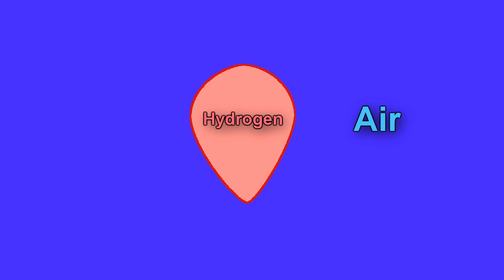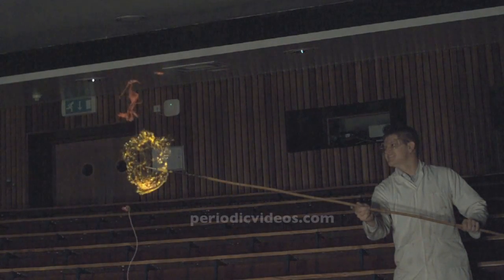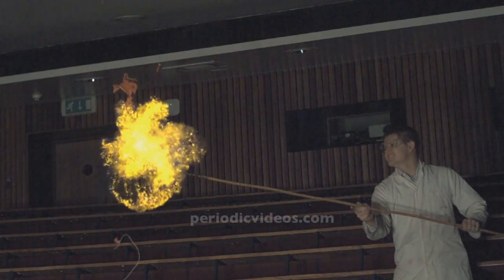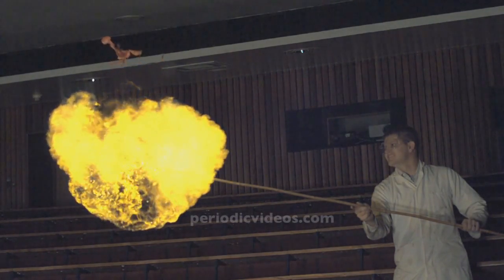So as expected when the balloon bursts the flame initially goes around the outside of the balloon where there is both hydrogen and oxygen in the air. But then this happens you get this flame that goes straight through the middle of the balloon where there is only hydrogen and hydrogen on its own cannot burn. So what's going on here?